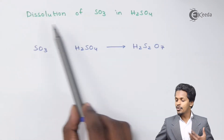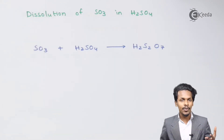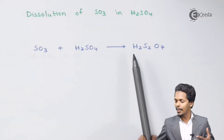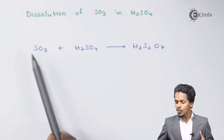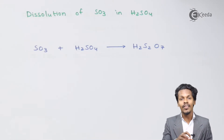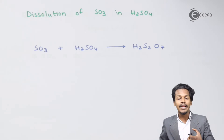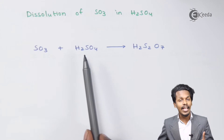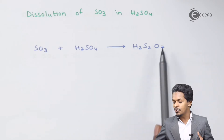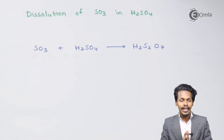The third step is the dissolution of SO₃ in H₂SO₄. The Sulfur Trioxide obtained in step 2 is dissolved in H₂SO₄ to obtain Oleum, which has the formula H₂S₂O₇. SO₃ is not dissolved directly in water because SO₃ dissolved in water forms a mist that interrupts further reaction. That is why it is dissolved in H₂SO₄ instead, forming H₂S₂O₇, which is Oleum — also called fuming sulfuric acid.